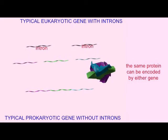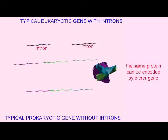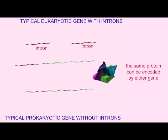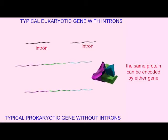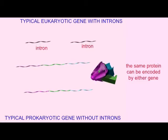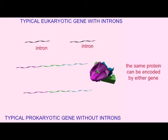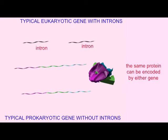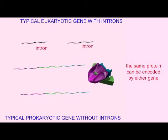While in eukaryotes, typically, the protein would be encoded by three separate exons separated by introns. And after transcription, the introns would be removed and the exons spliced together before the translation of this protein.